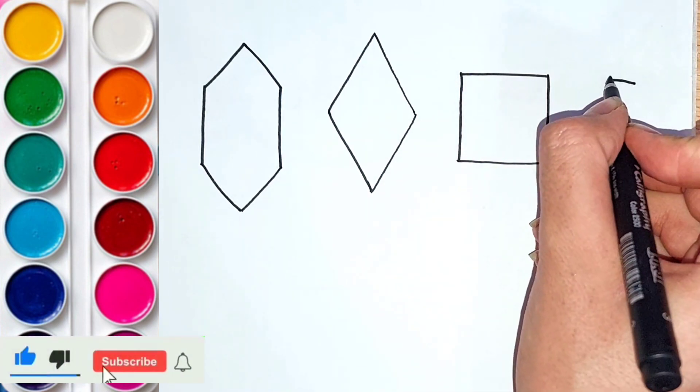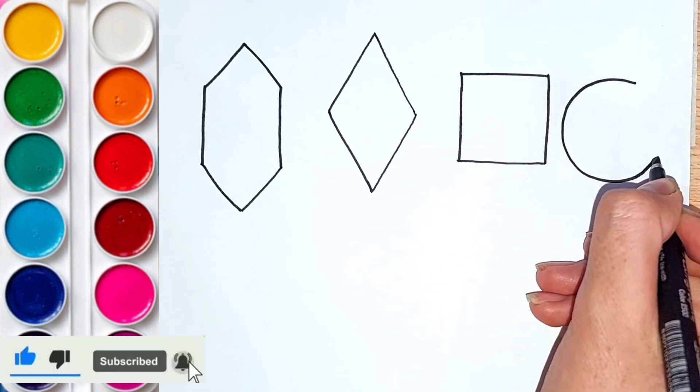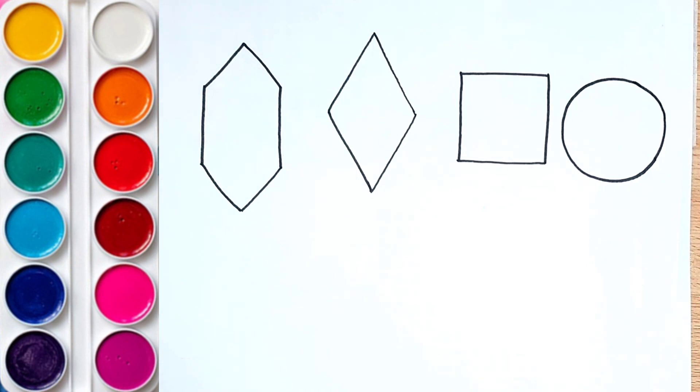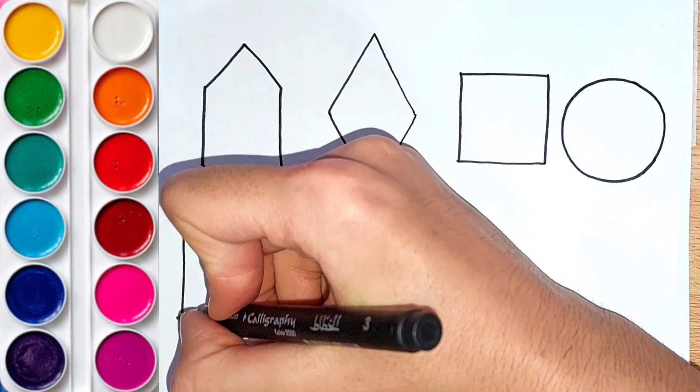It's a square! This is a circle. Rectangle shape.